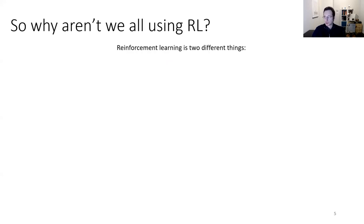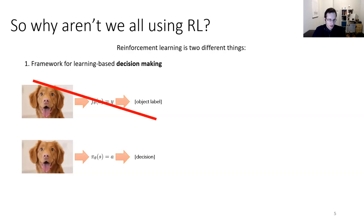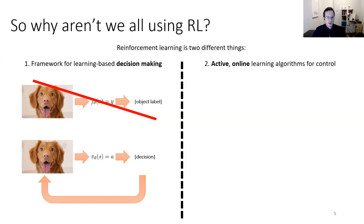There's a reason why supervised learning is such a powerful framework. Reinforcement learning is really two different things: on one hand, it's a framework for learning-based decision making — mapping states to actions — where data is not iid, it's not densely supervised with correct labels, and the goal is to maximize utility rather than likelihood. On the other hand, reinforcement learning is something else too: a framework for active online learning for control.